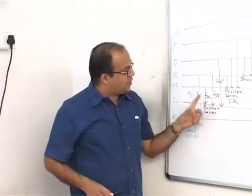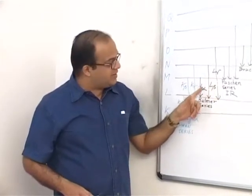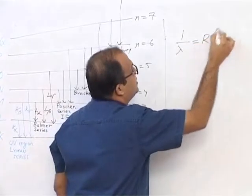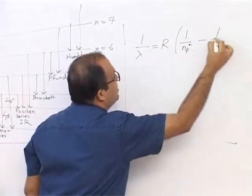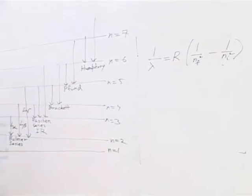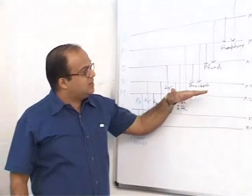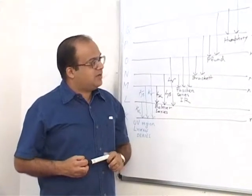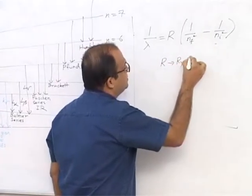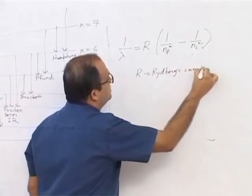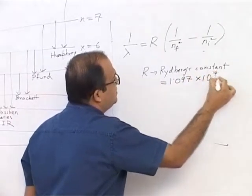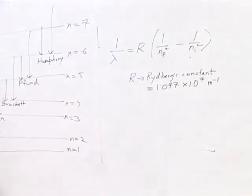Balmer had given a formula to calculate these wavelengths. This formula was later modified by Rydberg. And that formula is: 1 by lambda equal to R into 1 by Nf squared minus 1 by Ni squared. So Nf is the final energy level, Ni is the number of the initial energy level, and R is Rydberg's constant. Rydberg's constant has a value of 1.097 into 10 to the power 7 per meter.